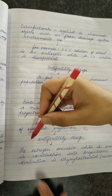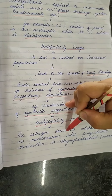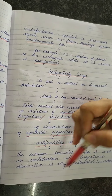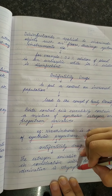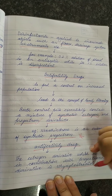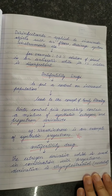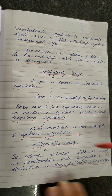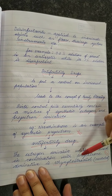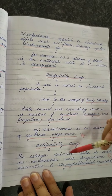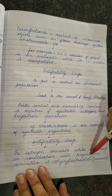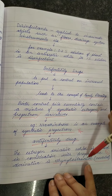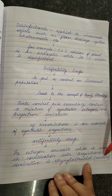The estrogen derivative used in combination with a progesterone derivative is ethinyl estradiol, commonly known as novestrol. This comes up as a one-mark question: novestrol is an estrogen derivative of ethinyl estradiol used in combination with progesterone.